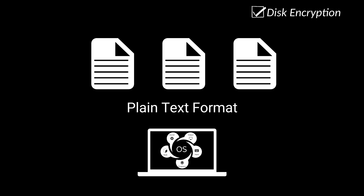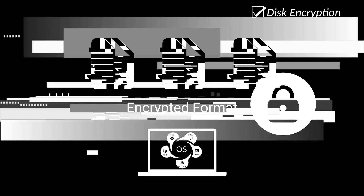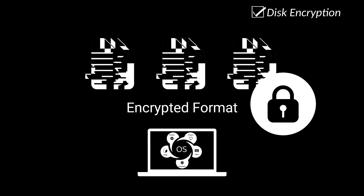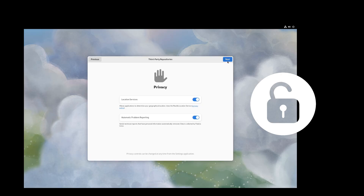Encryption is the method of transforming data from plain text into an unreadable format. The data is encoded with a key used to decipher and restore the data into a usable state.